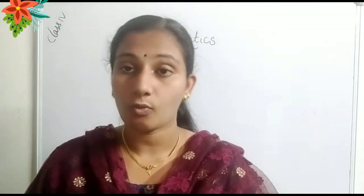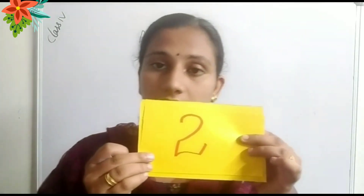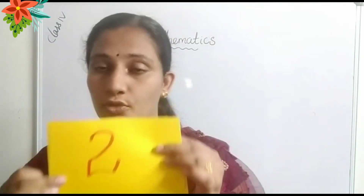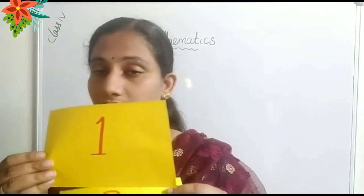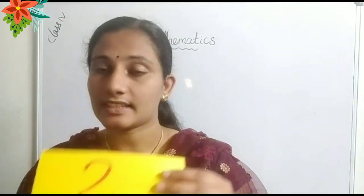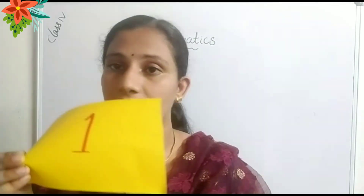Hi dear children. Do you know what is an odd number and an even number? Which number is this? This is 2. And what about this number? This is 1. 2 is the first even number and 1 is the first odd number.